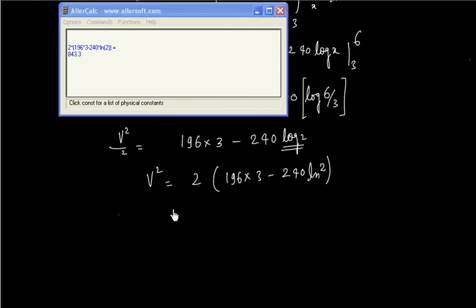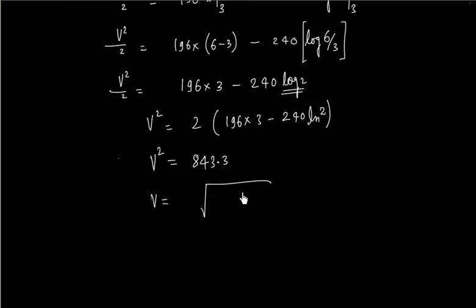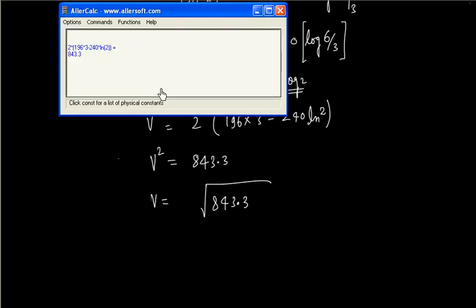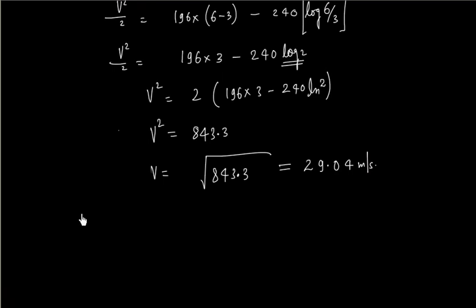So v is under root 443.3. So this is 29.04. So finally this block will gain a velocity of 29.04 meters per second.